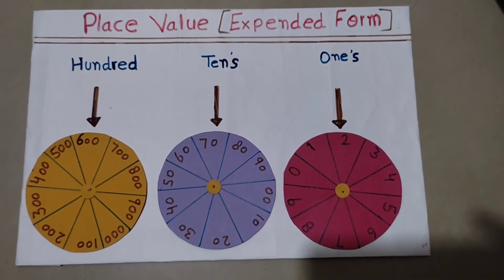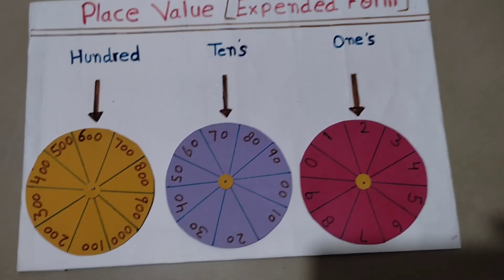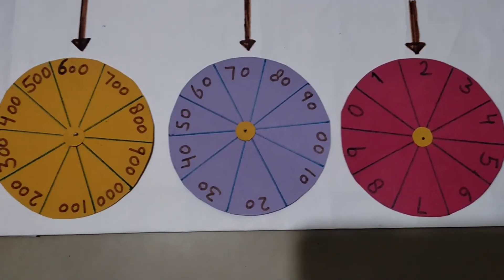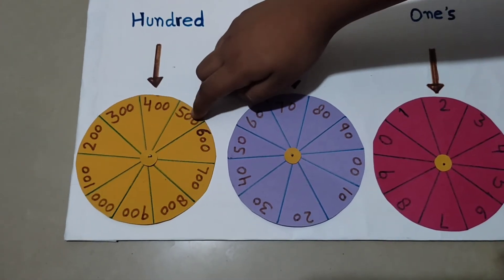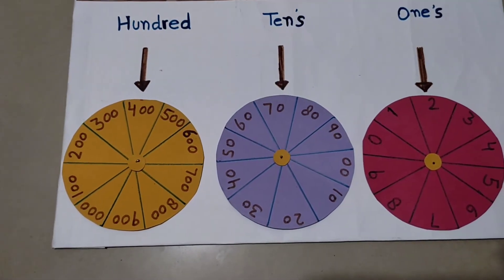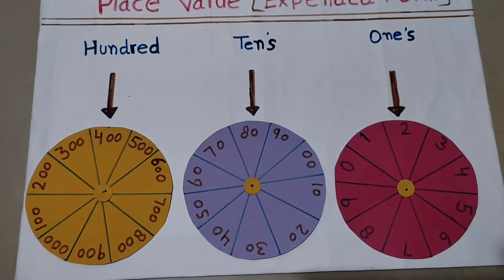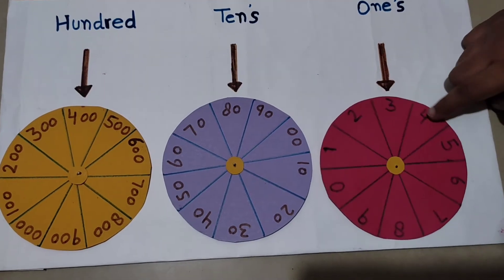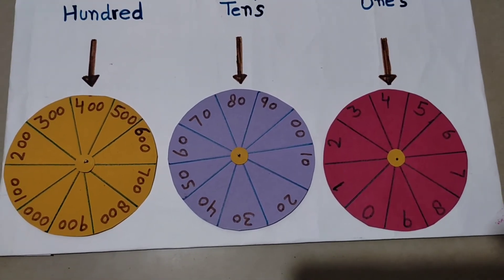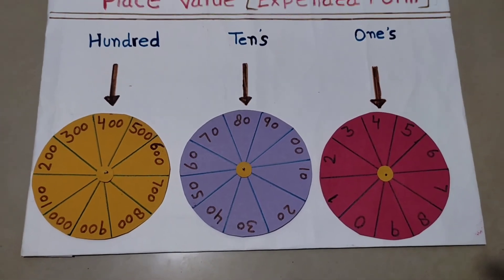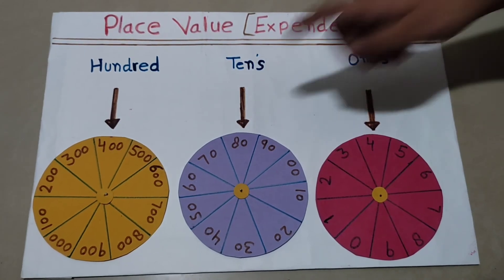Suppose if we want to make the expanded form of 486, we will move the 100th wheel to 400, and we will move the 10th wheel to 80, and we will move the 1st wheel to 6. The expanded form of 486 is 400 plus 80 plus 6.